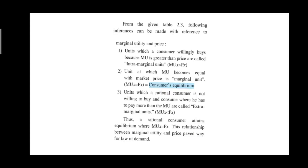First inference: units which a consumer willingly buys because marginal utility is greater than price are called intra-marginal units — that is, MU of X is greater than price of X, which applies up to the third unit. Second inference: the unit at which marginal utility becomes equal to market price is called the marginal unit — here it is the fourth unit purchased — where MU of X equals price of X, representing the consumer's equilibrium.